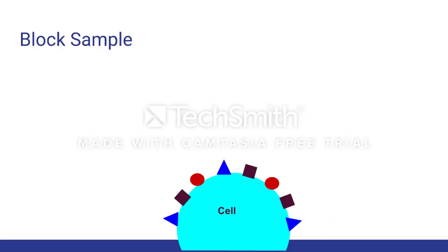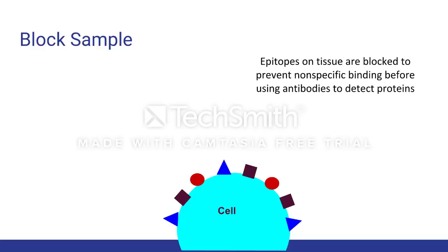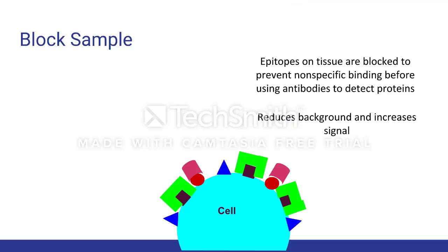The next step in immunofluorescence is blocking the sample with BSA. Blocking a tissue is done to prevent the nonspecific binding of the antibodies to other antigens on the cell membrane or epitopes. The antibodies are unable to bind to other epitopes because of the block in place. This helps to reduce background and increases the signal that we see when we look at the sample under a microscope.